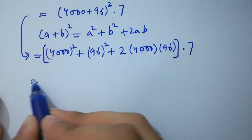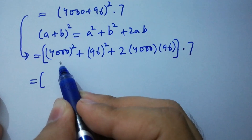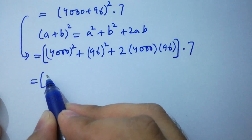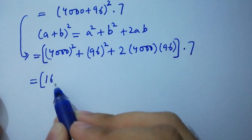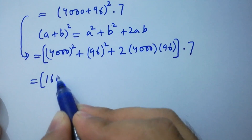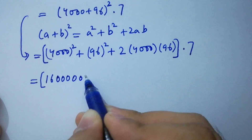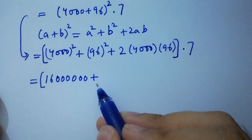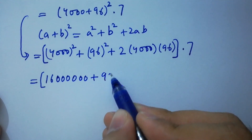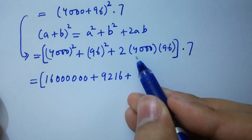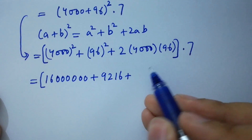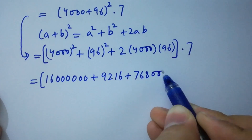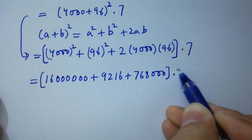Simplify this now. We have 4000 times 4000: 4 times 4 is 16, with six zeros, giving 16,000,000. Plus 96 times 96, which is 9216. Plus 2 times 4000 times 96 gives 768,000. Times 7 as it is.